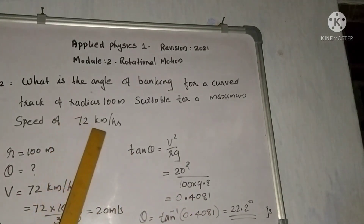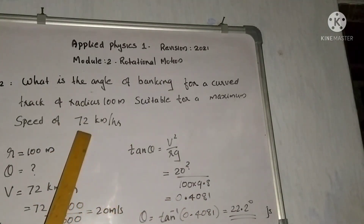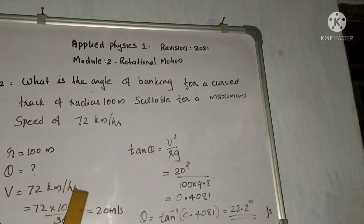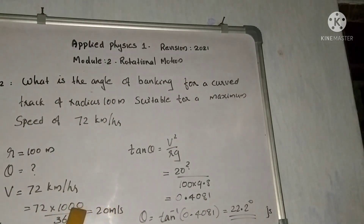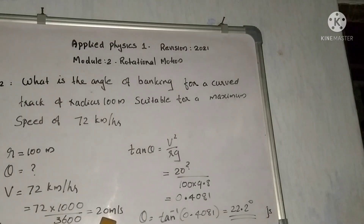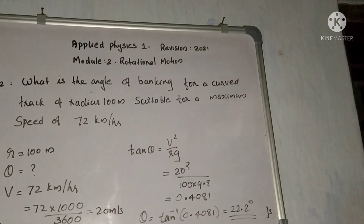Speed is 72 km per hour. Converting to SI units, velocity is 20 m per second. Acceleration due to gravity is 9.8 m per second squared.